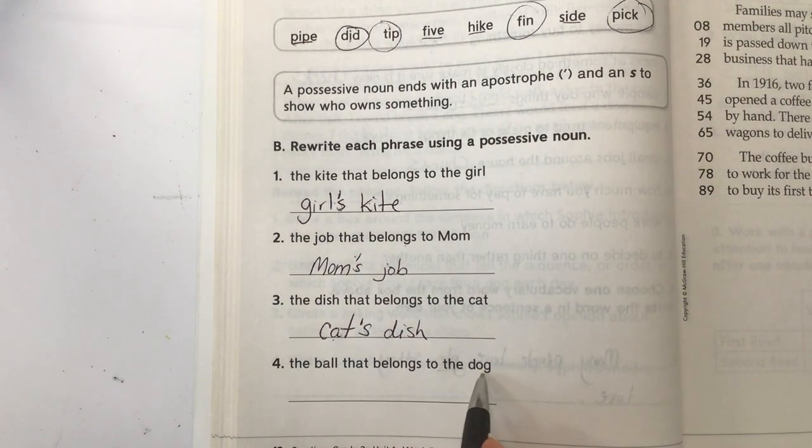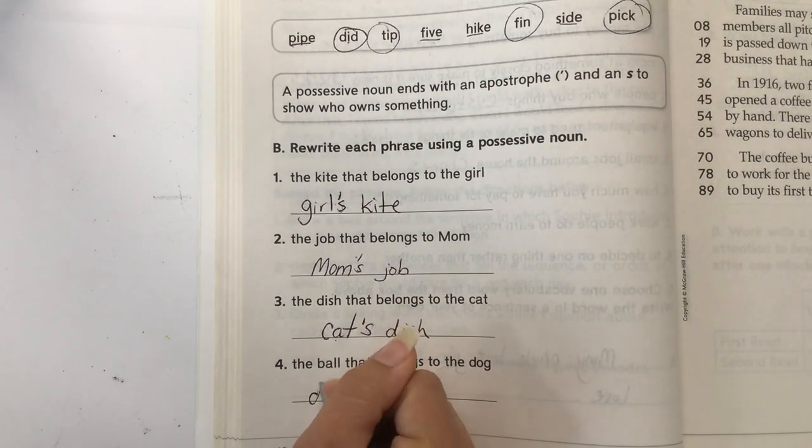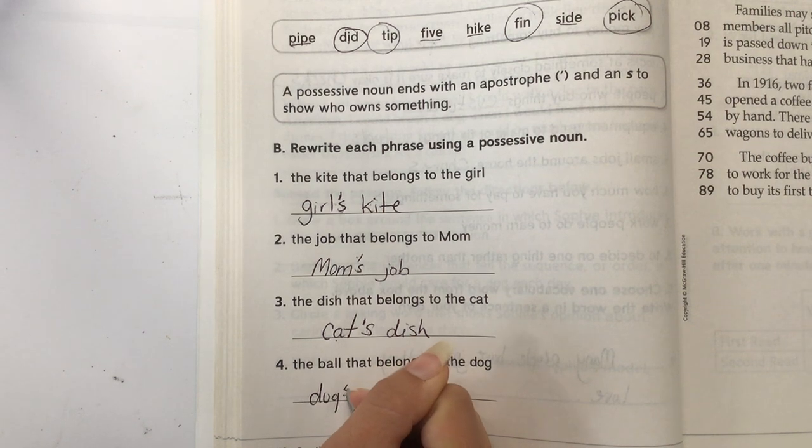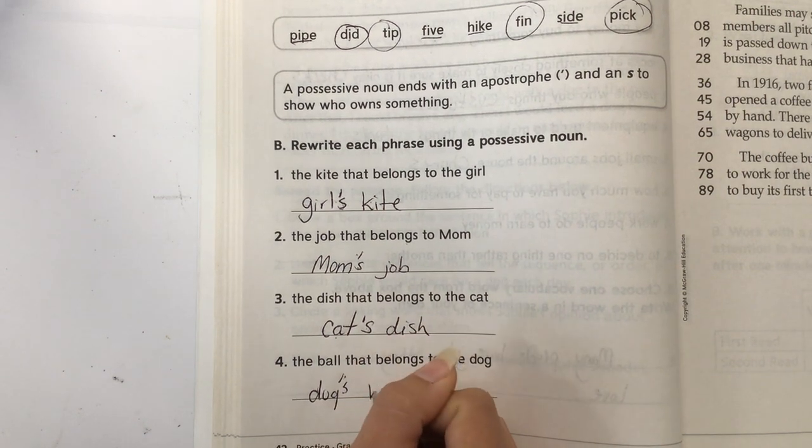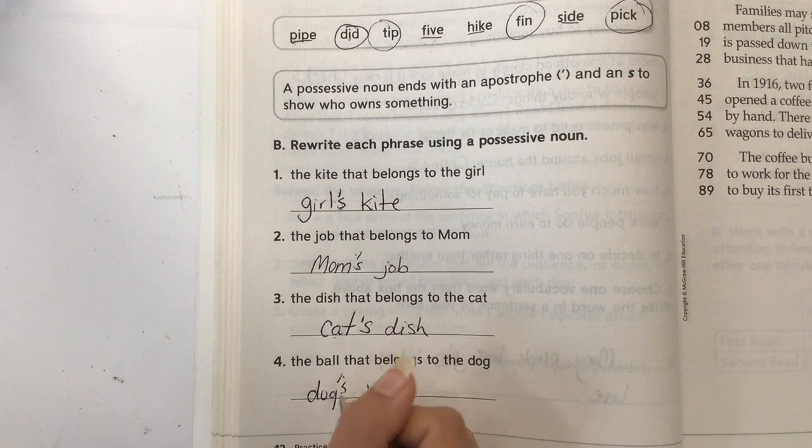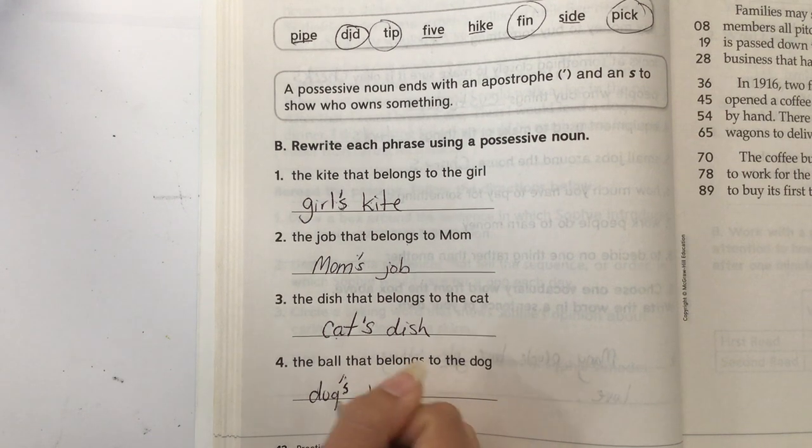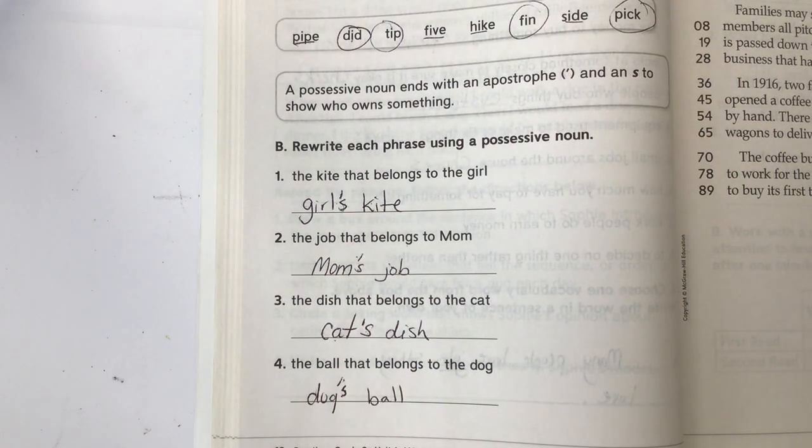The ball that belongs to the dog. So that would be the dog, apostrophe S, ball. So there's one dog. Apostrophe S means the ball belongs to the dog. Hope that helps.